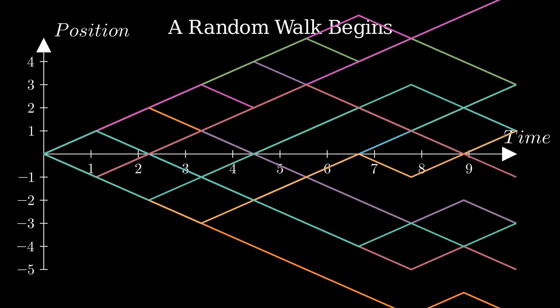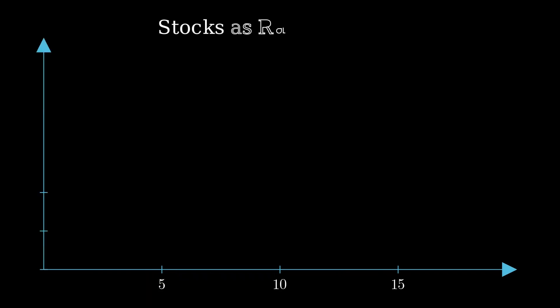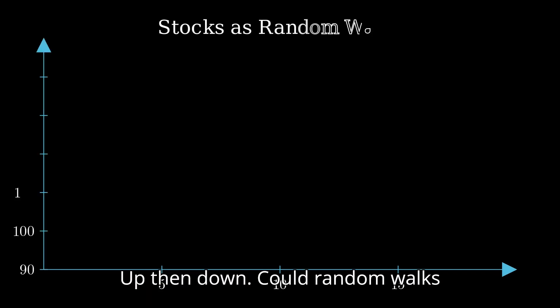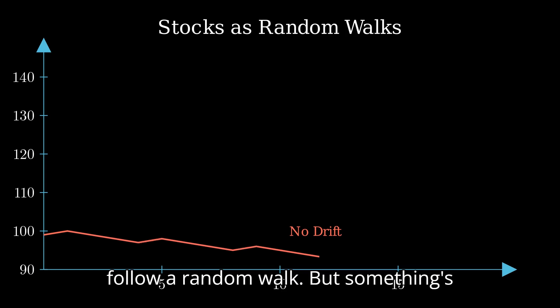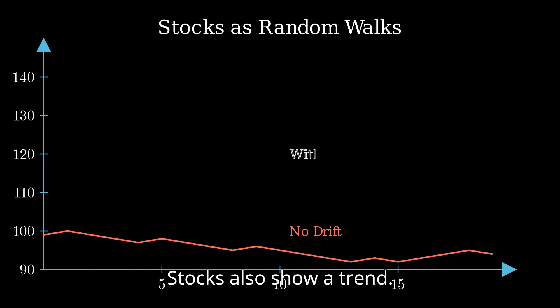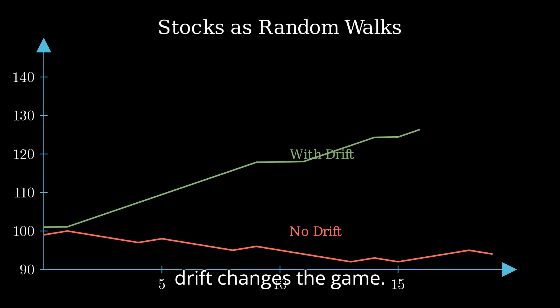Stocks zigzag at every time step—up, then down. Could random walks explain this? Yes. If stocks react randomly, their prices follow a random walk. But something's off. Stocks also show a trend; prices drift up or down. This drift changes the game.